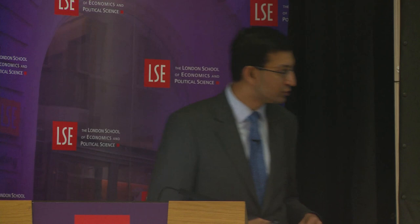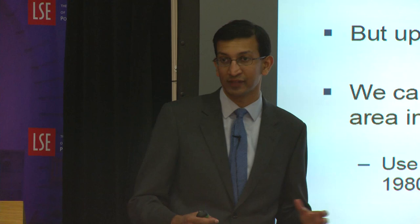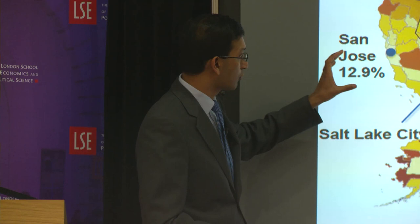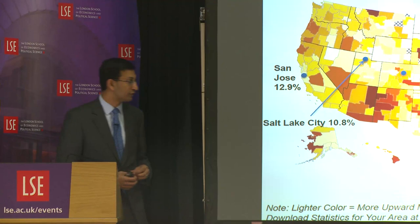What we do is classify children based on where they grew up and track them no matter where they live as adults. When I refer to locations throughout these lectures, I'm referring to where you grow up as opposed to where you live as an adult. Using that data, we draw a map showing the geography of upward mobility in the United States. It plots your chances of reaching the top fifth of the income distribution conditional on starting in a family in the bottom fifth. We divide the US into 740 different metro and rural areas — what are called commuting zones.